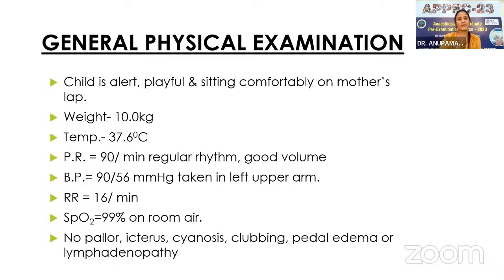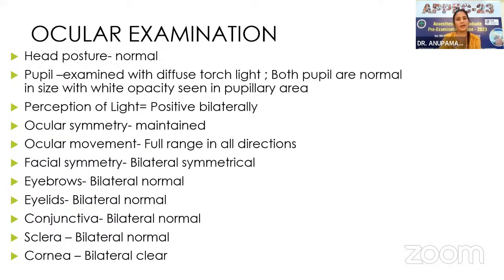Blood pressure is 90/56 mmHg in the left upper arm, respiratory rate 16 per minute, SpO2 99% on room air. No pallor, icterus, cyanosis, clubbing, or lymphadenopathy. Ocular examination: head posture is normal; pupils examined with diffuse torch light show bilateral white opacity in the pupillary area; perception of light is positive bilaterally. Ocular symmetry is maintained, ocular movements are full range in all directions, and the rest of ocular examination is within normal limits.